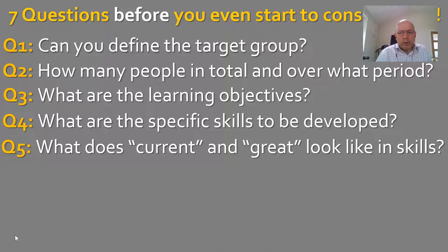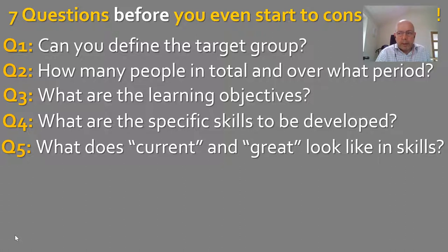Once you know the skills you're looking to develop — for example, change management and influencing skills — there are two further questions. First, what does the average participant look like? Can you profile them, placing people on some sort of spectrum using skill models? Second, and even more important, what does 'great' look like? Where are your top performers — the exemplars of these best skills — and where have they reached? That gap is what you're looking to address through any intervention.